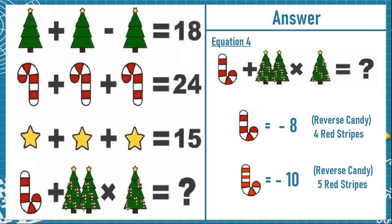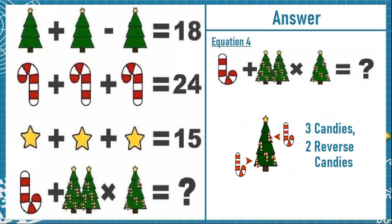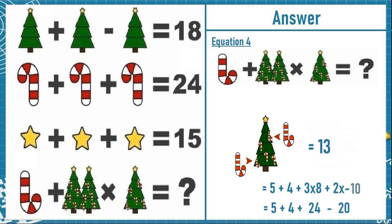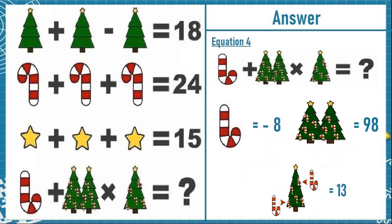So we have a tree with 3 normal candies and 2 reverse candies of 5 stripes. The value is: 5 (star) plus 4 (tree level) plus 3 times 8 (normal candies) plus 2 times minus 10 (reverse candies), which gives 5 plus 4 plus 24 minus 20, equaling 13. So this tree with reverse candies and candies is equal to 13.